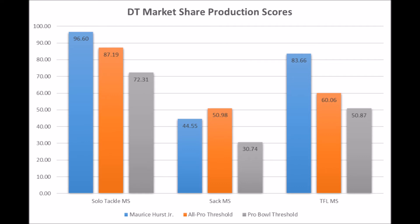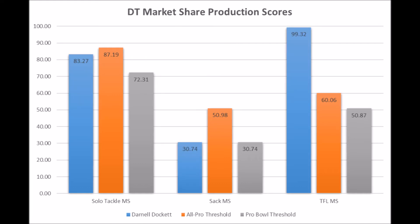That's the only area where he doesn't quite seal the deal in his data profile. But all of this is indicative of a multiple pro bowl player. The player he produced similarly to, in different ways, is Darnell Dockett of Florida State. Dockett had high-end solo tackle data and high-end tackle for loss data — in fact, tackle for loss was by far his best attribute — but only the bare minimum threshold in sack market share. Hurst is a little better in sack market share and considerably better in solo tackle data.